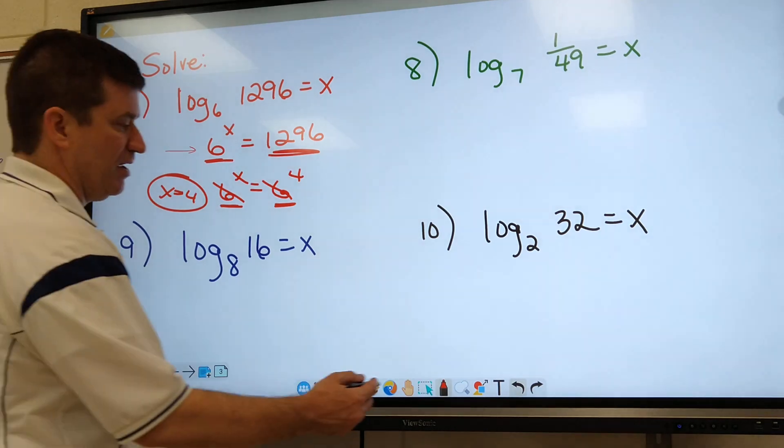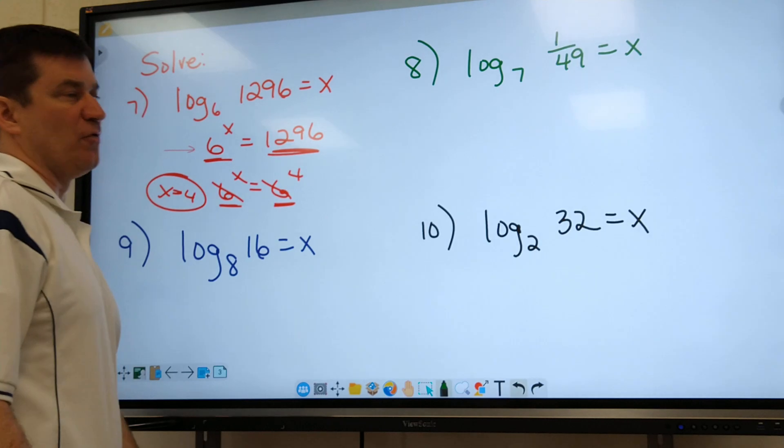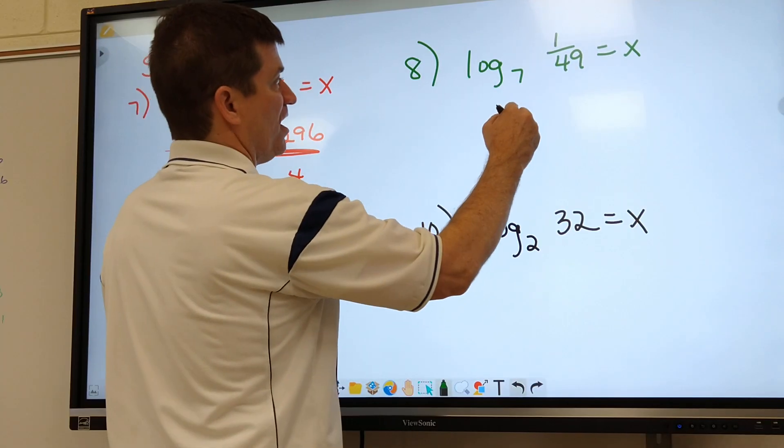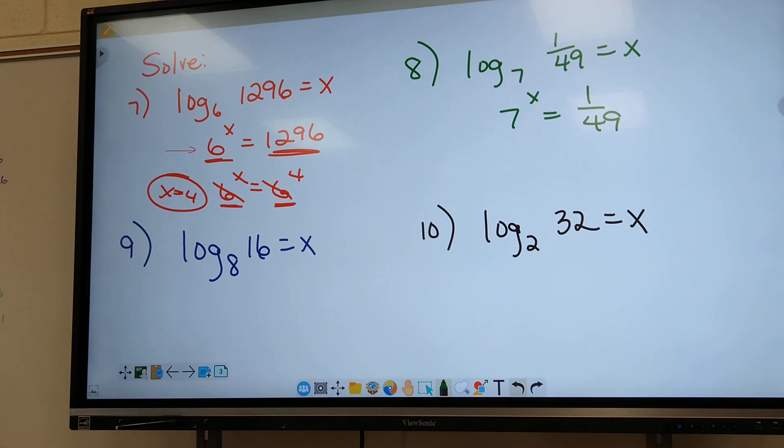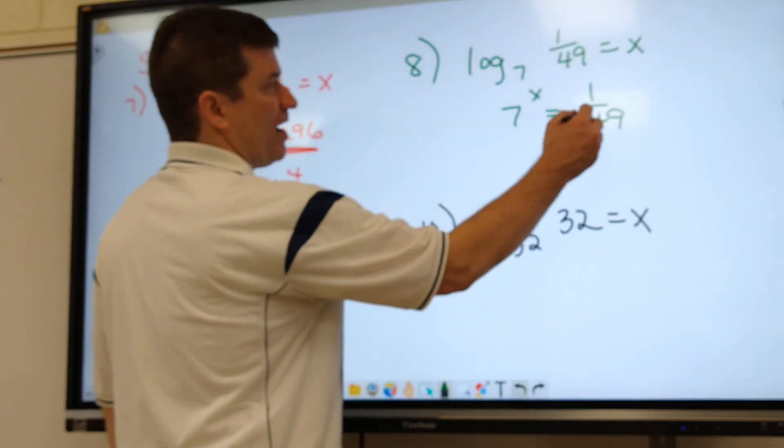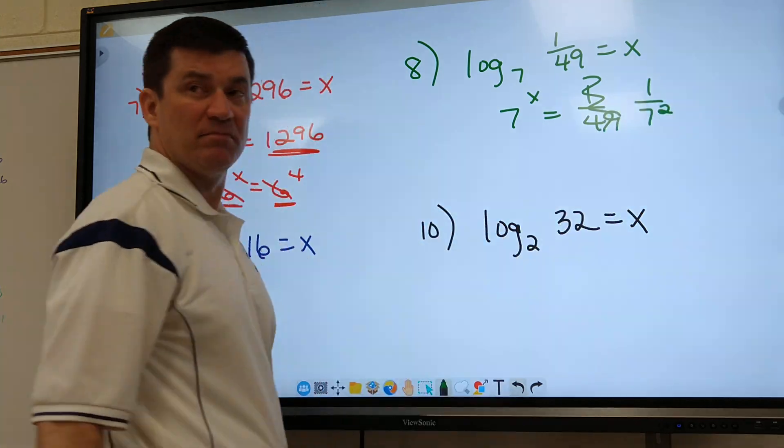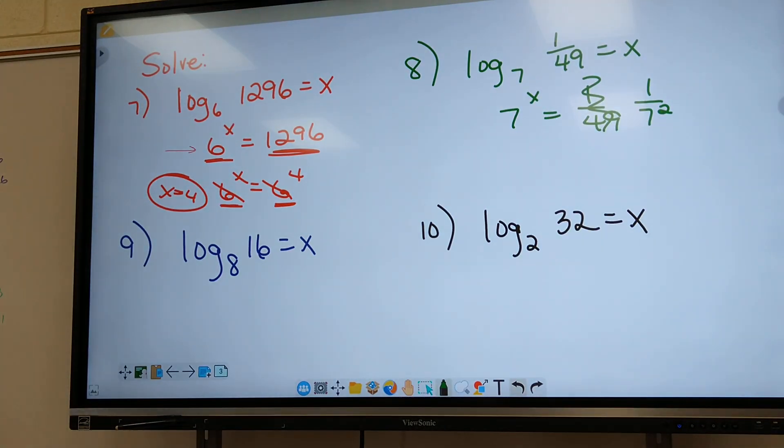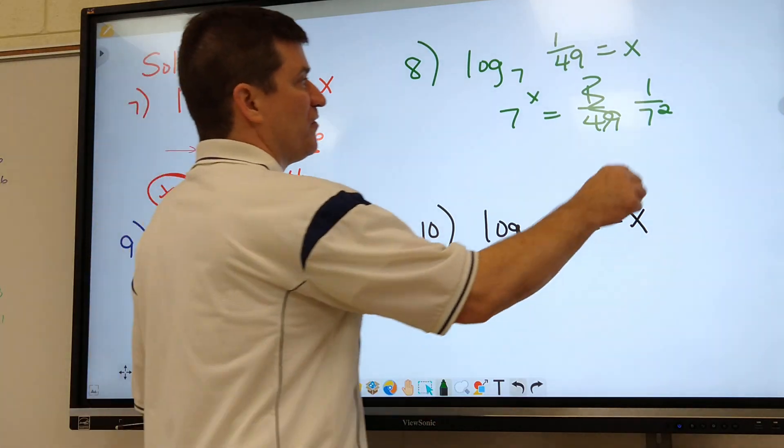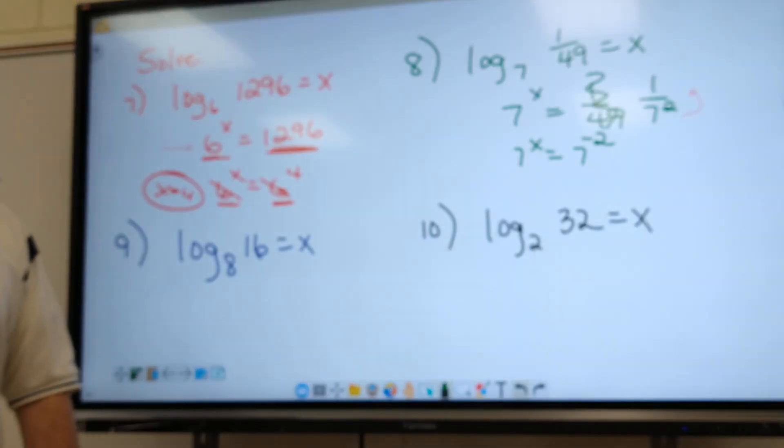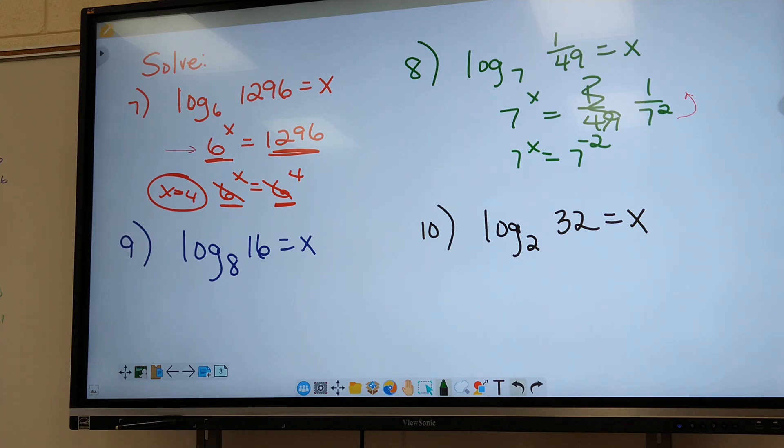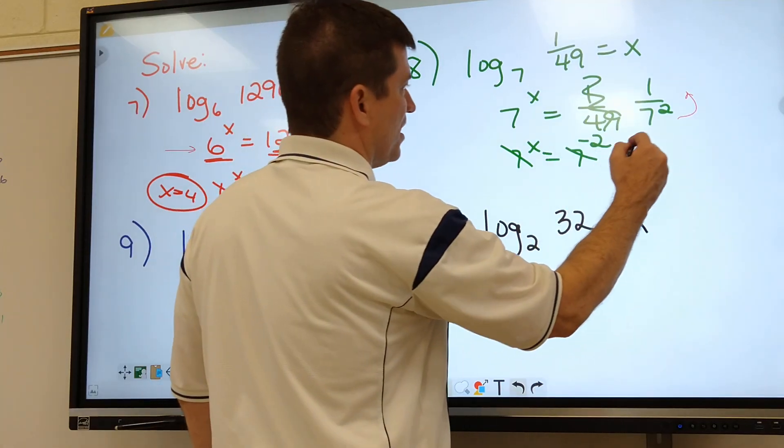All right, so number eight, same thing. Who can set it up for us? Number eight, anybody? Seven to the x power equals one over 49, right? Now we solved ones like this the other day. I forget which day we did it. Monday, Tuesday. 49 changes into seven squared. Does everybody agree with that? Just got to make them the same number, right? Okay, once you do that. Now Matthew, I can't have a fraction either. Y'all remember how we fixed the fraction? Move it from the bottom to the top and when you move it, it makes seven to the second into seven to the negative two. You got to move it. Can't have a fraction. Now what's your answer going to be? Mark out sevens. Answer's x equals negative two.